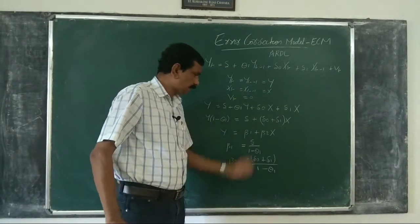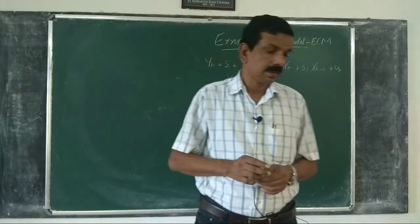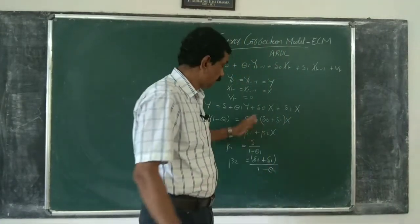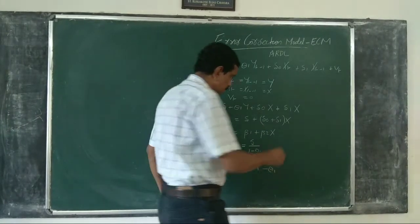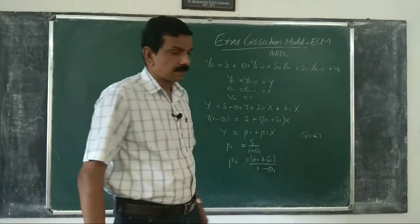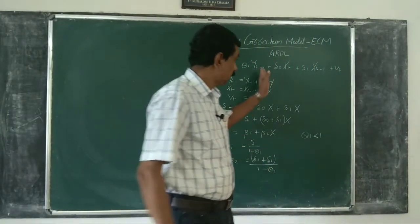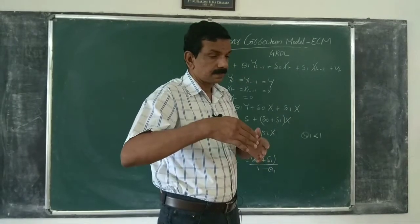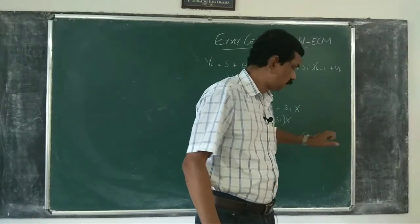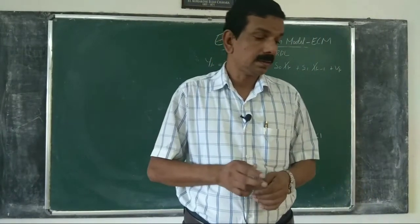So we have derived an implied co-integration between Y and X — that is, a long-run relationship between I(1) variables. We assume that theta_1 is less than 1; only under this assumption does the short-run ARDL model converge to the long-run model. So for convergence to happen, we assume theta_1 < 1.